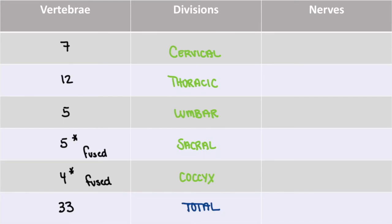Although we have 33 vertebrae, we don't have a corresponding number of nerves that exit the vertebrae — it's a little different. For the cervical spine, we have a total of eight nerves. For the thoracic spine, we have a total of 12. We have a total of five nerves for the lumbar spine, five nerves for the sacral spine, and one nerve that extends out of the coccyx region. Totaling these, we have 31 nerves. We've outlined the divisions of the vertebral column and identified the number of vertebrae and nerves corresponding to each region.